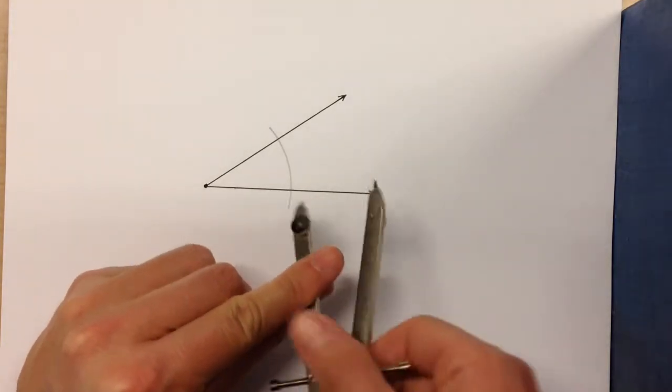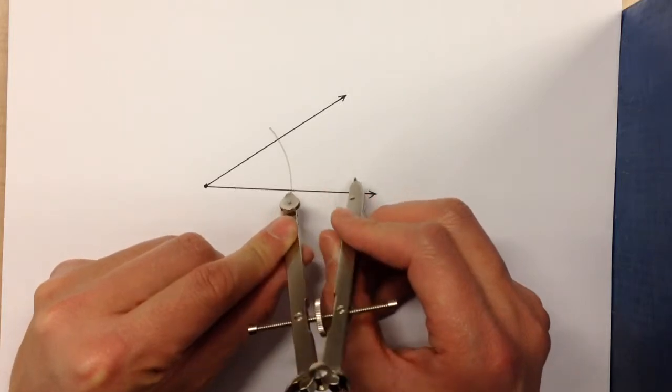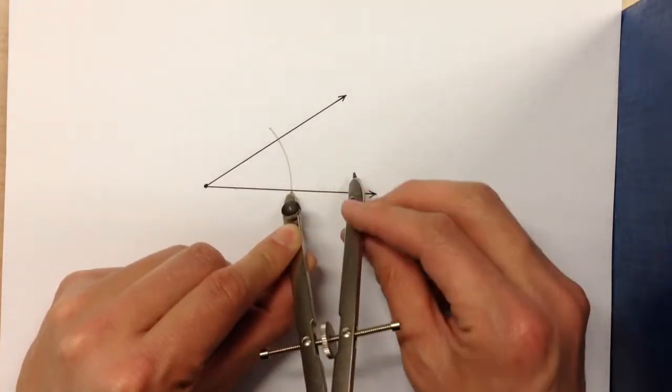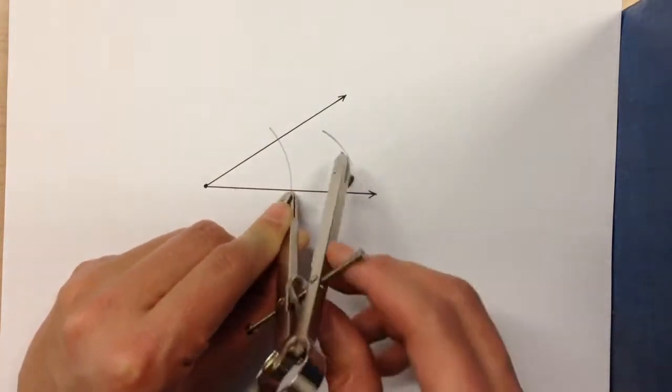Now, because we know the angle bisector is equidistant from each side, what I'm going to do is find where the arc intersects with my ray and swing an arc from there.